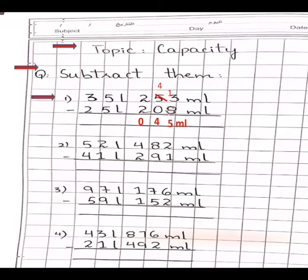5 minus 5 is 0, so you will write 0 liter. And l for liter. Now 3 minus 2. You will keep 2 in your mind and start opening fingers after 2 till 3.